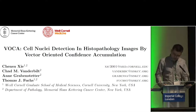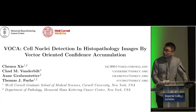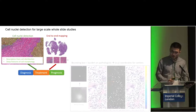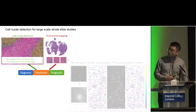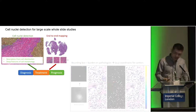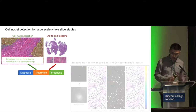One of the tasks we're considering is cell and nuclei detection in those kinds of images. We're interested in this task because when we talk about end-to-end mapping from cancer slides to downstream applications — like prediction of diagnosis, treatment, and prognosis — people typically resort to tiling of the whole slide because it's too big.